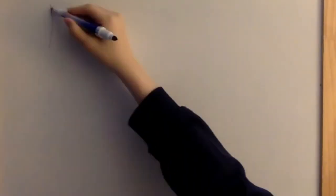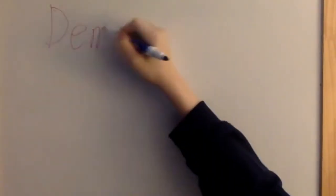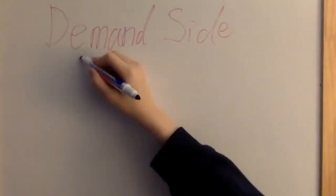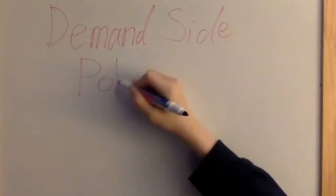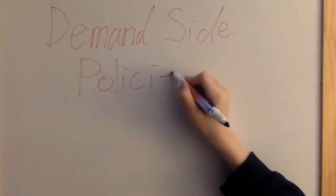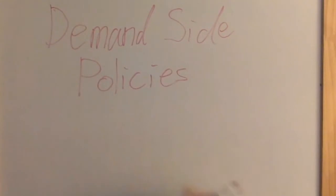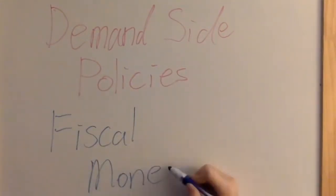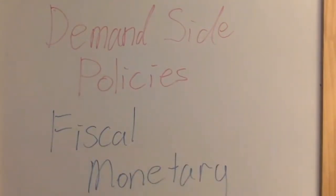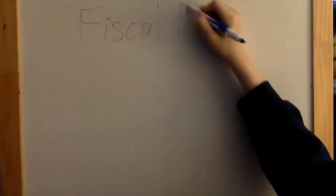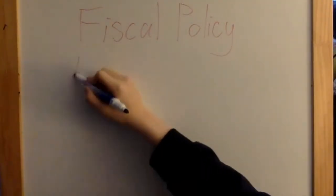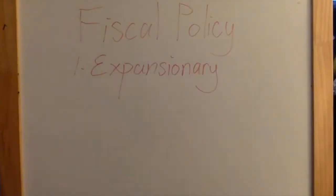Let's begin with demand-side policies. Like the name says, these are policies implemented by the government that will shift the aggregate demand curve. There are really only two types of demand-side policies: fiscal policy and monetary policy. Fiscal policy refers to when the government changes taxes or government spending.